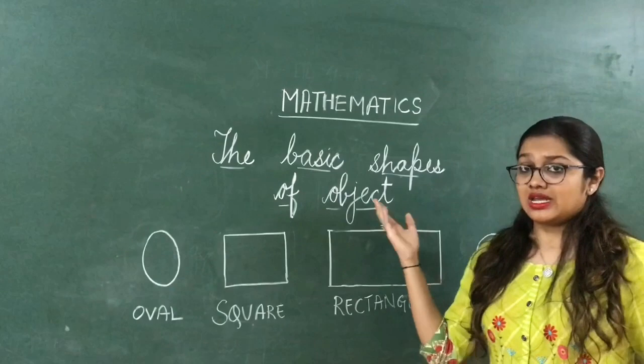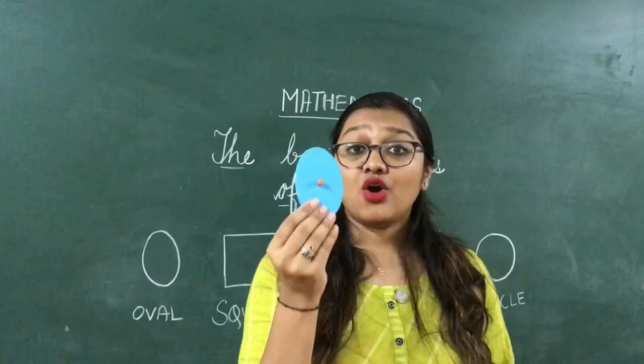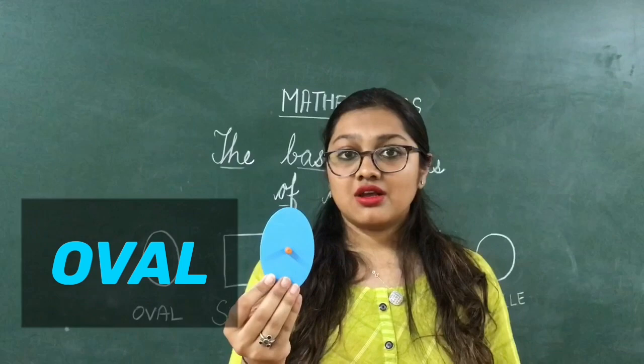Children, can you see the shapes drawn on the board? Tell me which shape is this? Oval, right? Let me give you some examples of oval: egg, watermelon, pineapple. Understood?